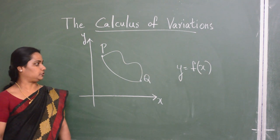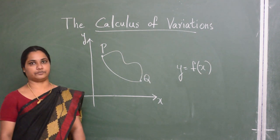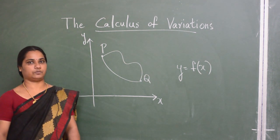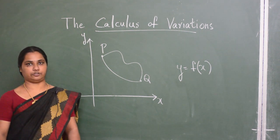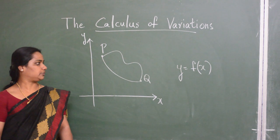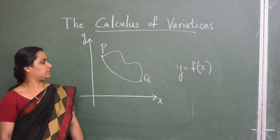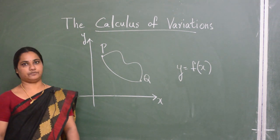In the first problem, the quantity that we tried to minimize was the length of the curve. In the second problem, we tried to minimize the surface area of revolution. And in the third problem, we are trying to minimize the time of descent.